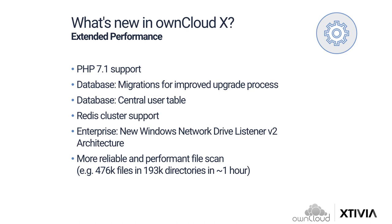From now on, OwnCloud has a central user table in the database that comprises all users independent of the backend they come from, whether that's LDAP or internal. This improves performance because of fewer LDAP and DB queries and is a prerequisite for changing usernames in the future. With regards to Redis cluster support, this is for larger setups where Redis key-value stores are used to store information such as session IDs and file locks. Those can now be used in a clustered way to improve performance and enable high availability coverage in large scenarios with several thousands of users.